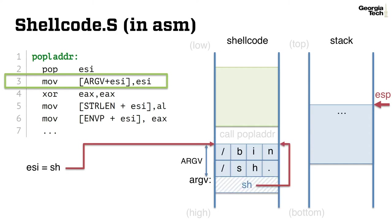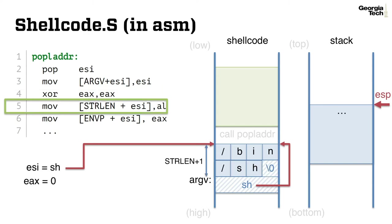First, we put the pointer as a first argument to argv. Second, we clear out the EAX register. Then we put null character at the end of bin shell string.